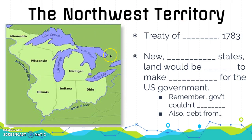You can see we are in the Northwest Territory — please make sure that you are writing down the states included in that territory. When the US acquired this land, the government decided this area would become new and separate states, and the land would be sold to make money for the US government. Remember, at this point in time the US government could not tax its citizens, so it had no way of making money. Also, the government was in a lot of debt because they had just finished fighting the American Revolution, which was very costly.